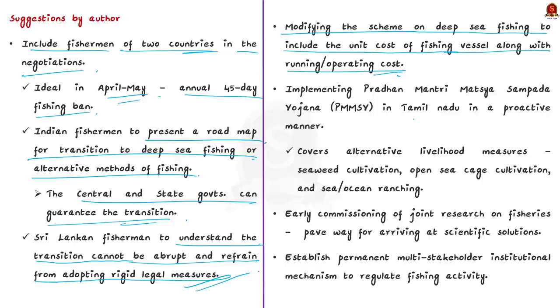The next suggestion is modifying the scheme on deep sea fishing to include the unit cost of fishing vessel along with running cost. Many schemes of the government are aimed at promoting deep sea fishing by converting existing fish vessels or assisting in buying new ones. They also provide subsidy, but the subsidy is provided only for the unit cost. Author suggests covering the operational cost also to encourage more fishermen to go for deep sea fishing practices.